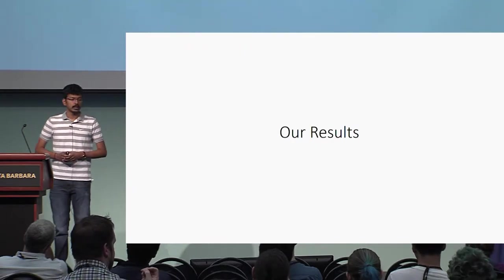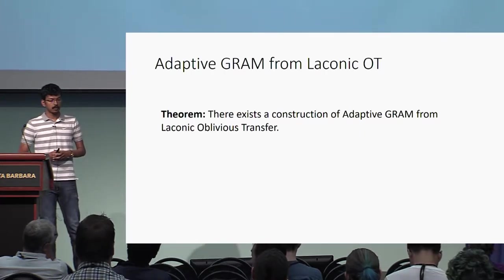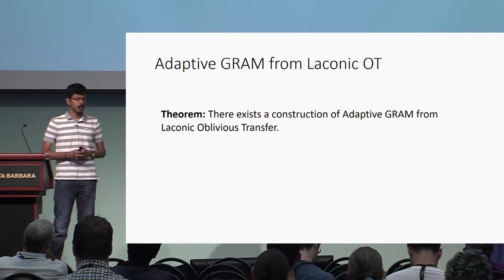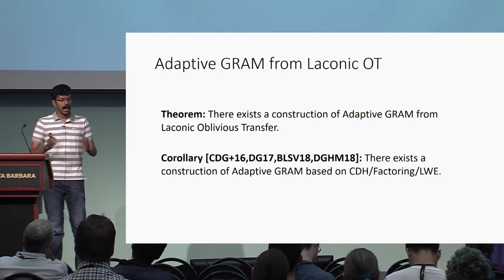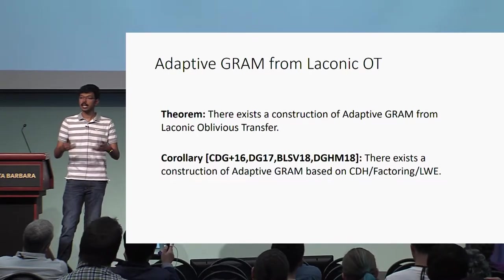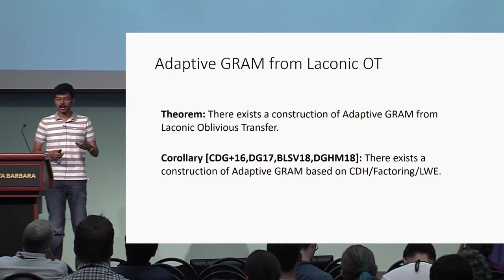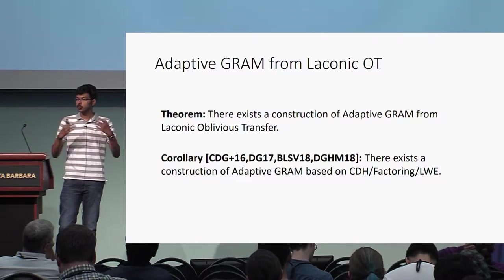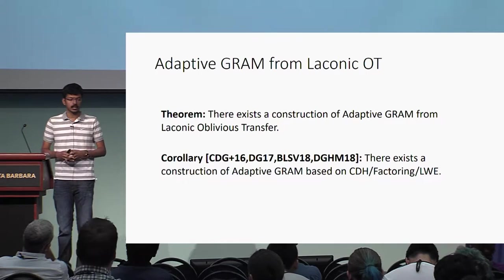The main result is a construction of adaptive garbled RAM from laconic oblivious transfer. Laconic oblivious transfer was introduced by Cho et al. in Crypto last year and has already found several interesting applications. A direct corollary, obtained by plugging in known constructions of laconic OT, is a construction of adaptive garbled RAM based on standard number-theoretic assumptions such as computational Diffie-Hellman, factoring, or even lattice-based assumptions such as LWE. As a consequence, we also obtain the first constant-round malicious MPC for RAM programs in the persistent setting.